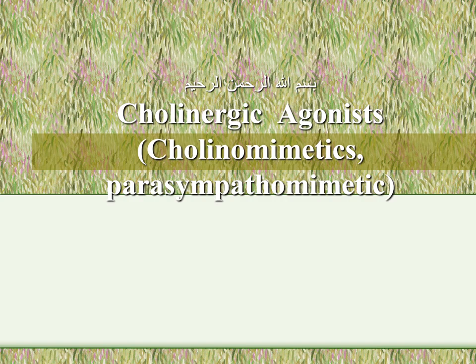Regarding cholinergic transmission, we first talked about the synthesis of acetylcholine. Acetylcholine is synthesized from choline and acetyl-CoA by the reaction catalyzed by the enzyme choline acetyltransferase (CAT). Choline is obtained from the liver or from the diet, while acetyl-CoA is synthesized in the mitochondria of the neurons, and the enzyme CAT is synthesized by the ribosomes of the cell body of the neurons.